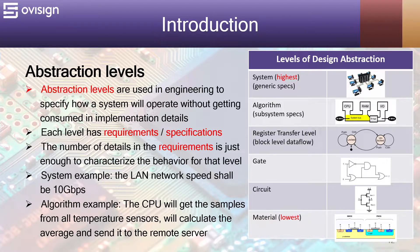Let's analyze some examples. System example: the local area network speed shall be 10 gigabits per second. Algorithm example: the CPU will get the samples from all temperature sensors, will calculate the average, and send it to the remote server.